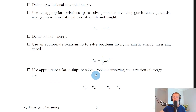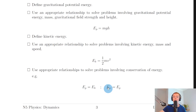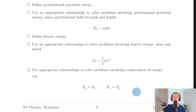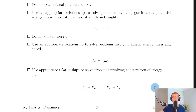Lastly, use appropriate relationships to solve problems involving conservation of energy. For example, gravitational potential energy may be completely converted into kinetic energy (assuming no losses due to friction or air resistance), giving EP = EK, i.e., mgh = ½mv². Or work done can be completely converted into gravitational potential energy, giving EW = EP, i.e., Fd = mgh. You can then manipulate these expressions to find an unknown variable.